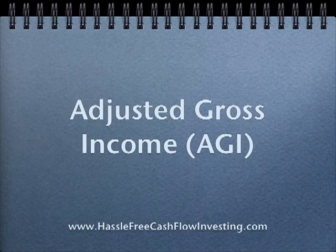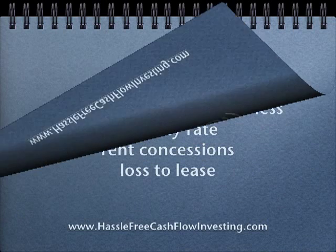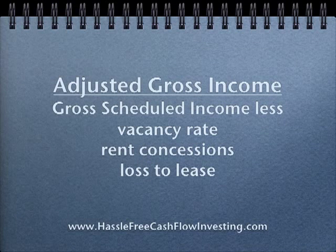Let's talk about adjusted gross income, or AGI. Adjusted gross income is the gross scheduled income minus three things: we're going to take out vacancy rate, rent concessions, and forecasted loss to lease.